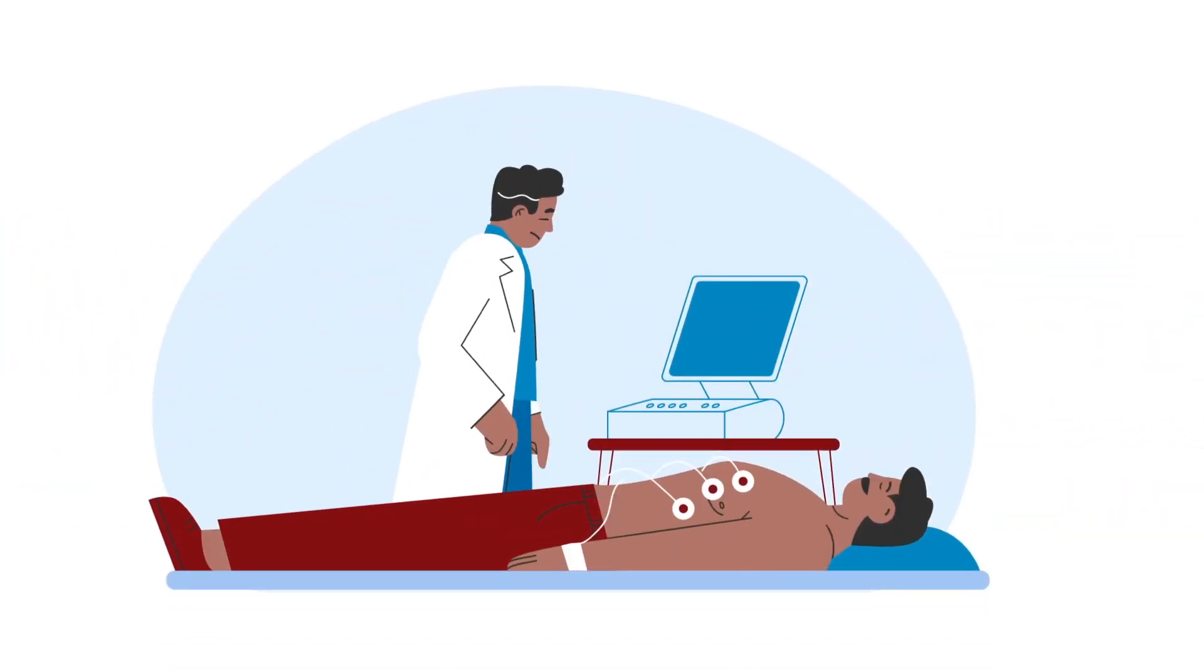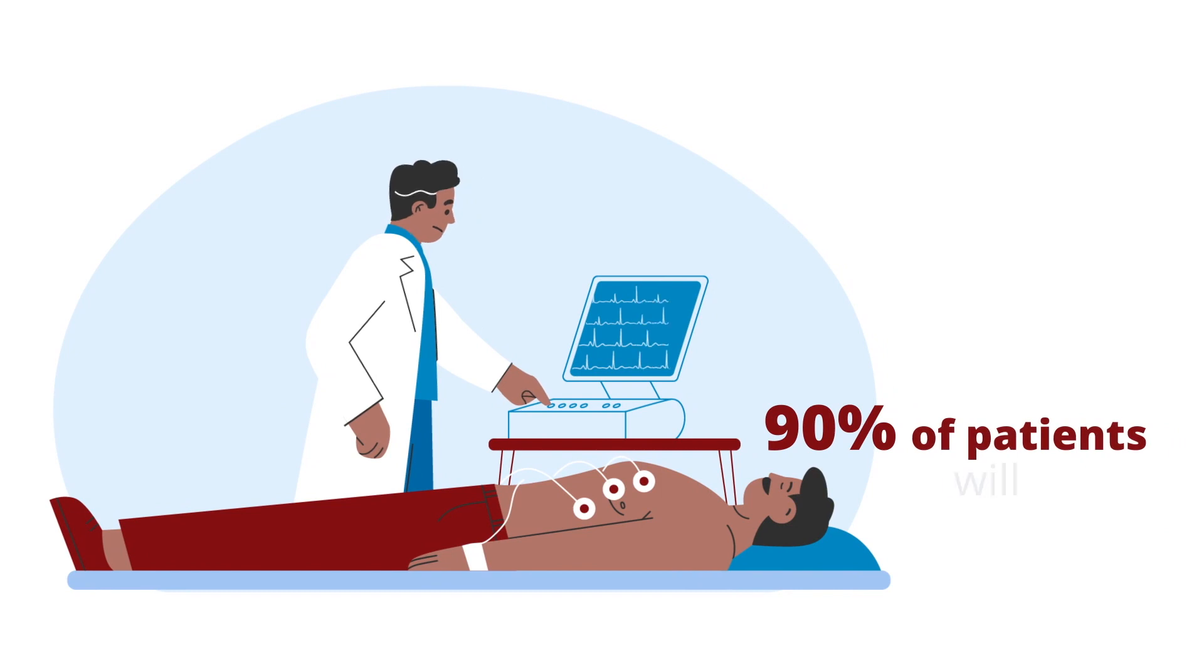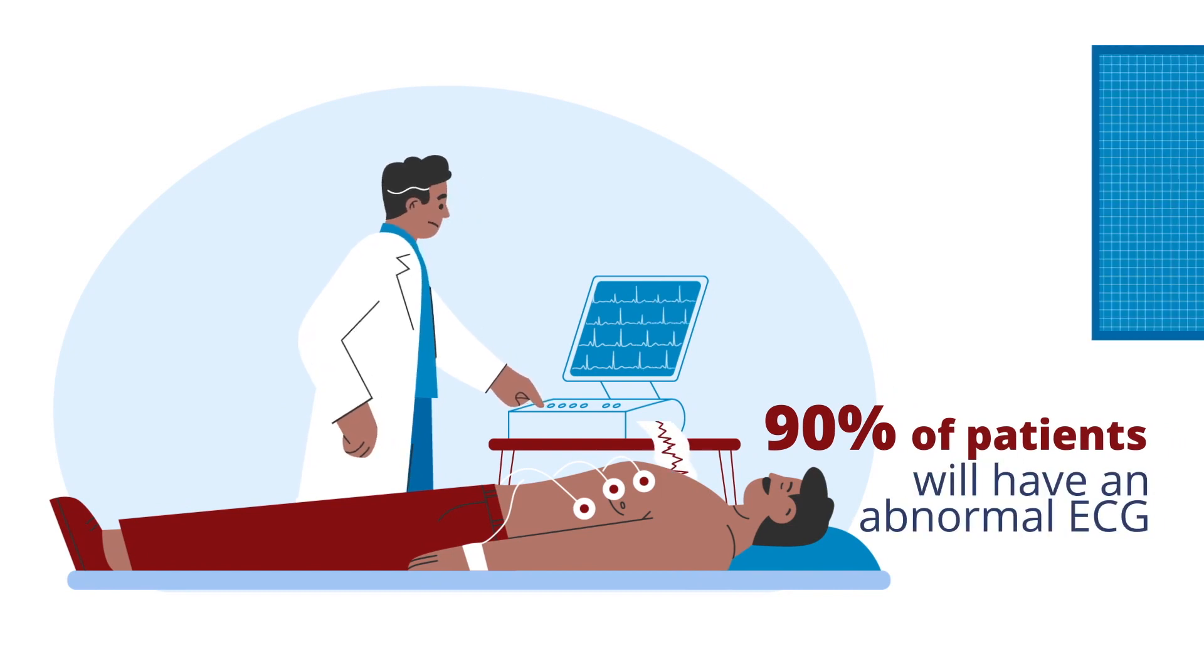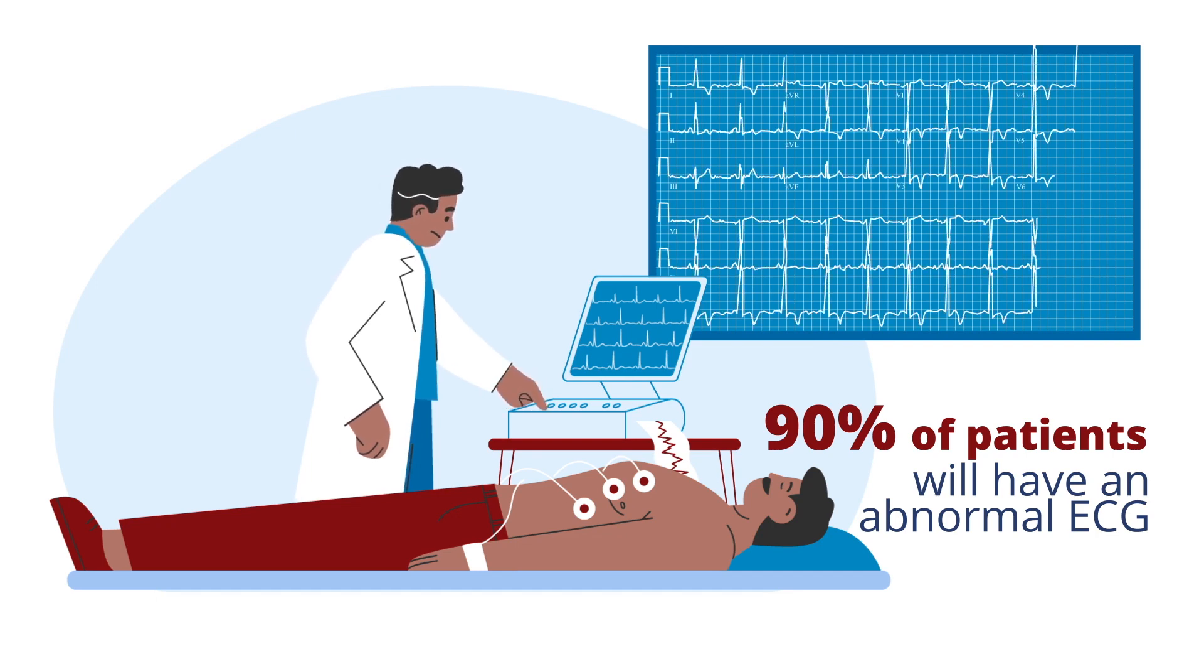You'll also want to pay attention to the ECG. About 90% of patients with HCM will have an abnormal ECG. While there are no pathognomonic findings, we'll often see deep T-wave inversions in the anterior or lateral leads, or ST-segment changes and Q-waves.